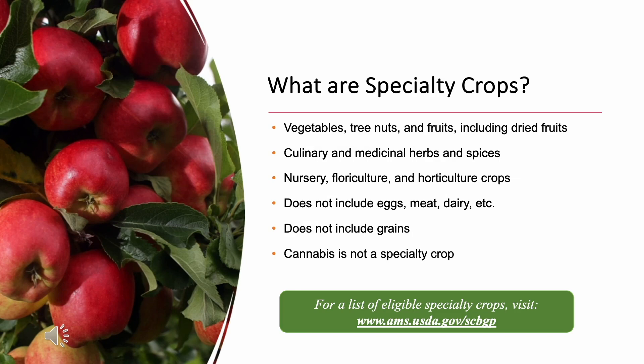So, what are specialty crops? Specialty crops are defined as vegetables, tree nuts, and fruits, including dried fruits, culinary and medicinal herbs and spices, and nursery, floriculture, and horticulture crops. Funds must not benefit non-specialty crops such as dairy, livestock, or any other ineligible commodities. Please note that cannabis is not a specialty crop. A list of eligible and ineligible commodities can be found on the U.S. Department of Agriculture website and is also included with the materials in the handouts tab on the GoToWebinar dashboard.